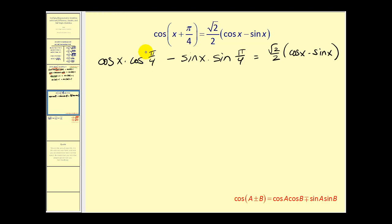Next we can evaluate cosine pi over four and sine pi over four. And if you don't have your unit circle handy, the sine of pi over four and the cosine of pi over four are both equal to the square root of two over two.